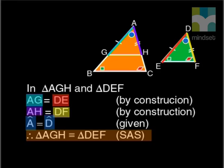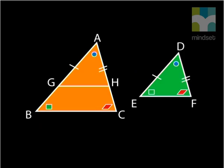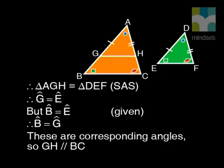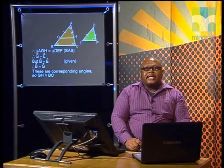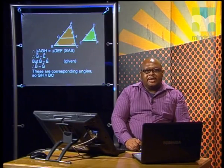Why did we want congruent triangles? We wanted to prove that angle G equals angle E so that we can say that GH is parallel to BC. Let's have a look. G equals E because the triangles are congruent. But B equals E was given at the beginning. So we know that B equals G.